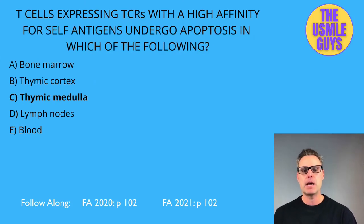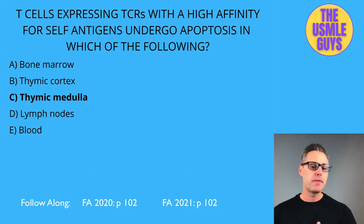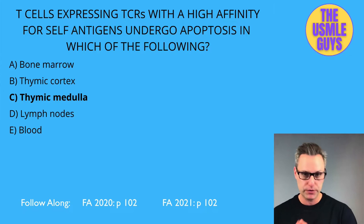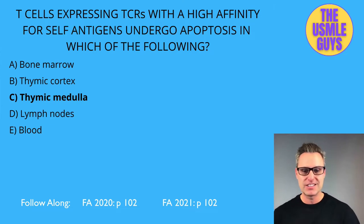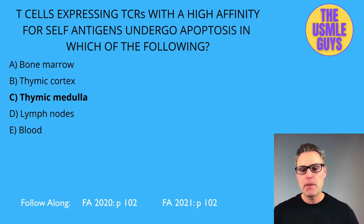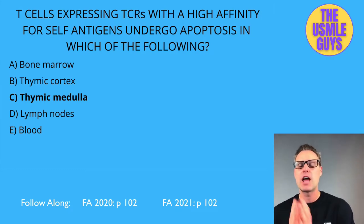The correct answer to this question is C, thymic medulla. In T-cell differentiation, starting from the T-cell precursor in the bone marrow: it moves into the cortex of the thymus, where it expresses CD4, CD8, and a T-cell receptor that binds both MHC1 and MHC2. Here, positive selection occurs — T-cells expressing TCRs capable of binding self-MHC on cortical epithelial cells will survive.